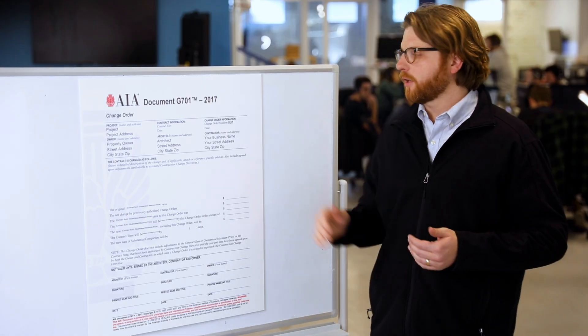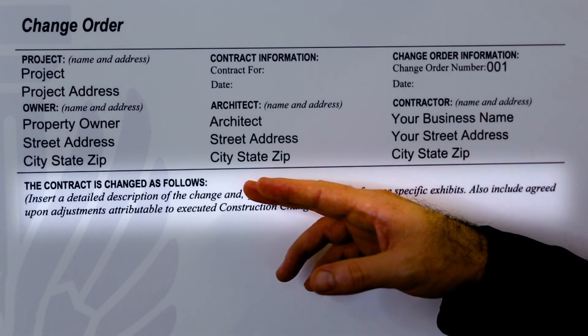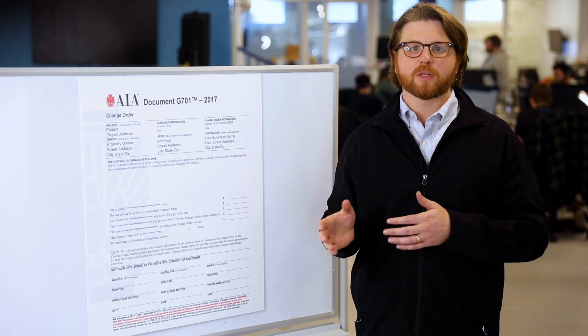The next section of the form begins: 'The contract is changed as follows.' This is where you put a detailed description of all the changes to the original contract. Make sure to include all the details of the proposed changes and the cost of each change. It's important to be specific in case there's any dispute later about scope or when payment is due. Best practice is to include any and all supporting documentation — drawings, specs, attachments, communications, or requests that fit within the change order.